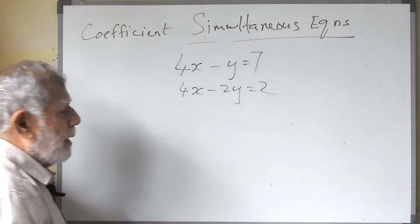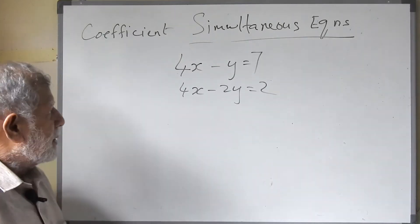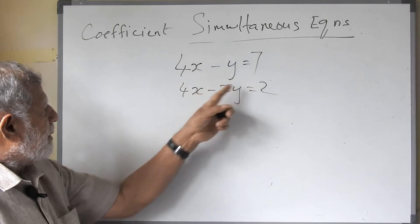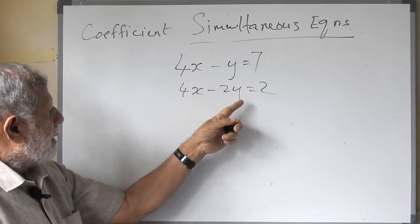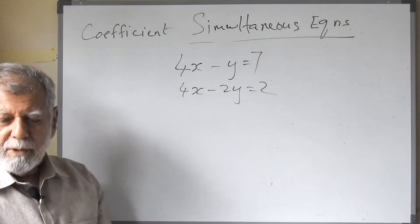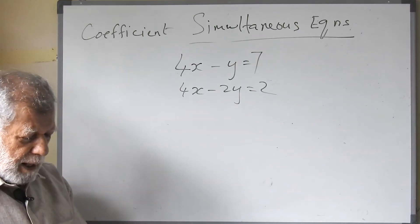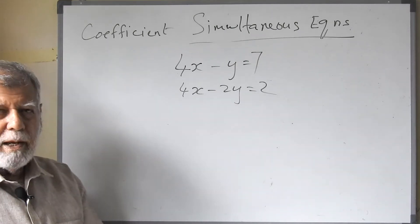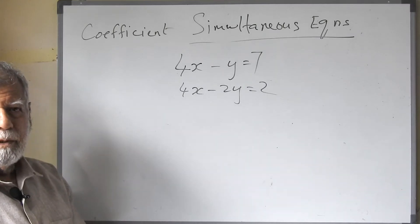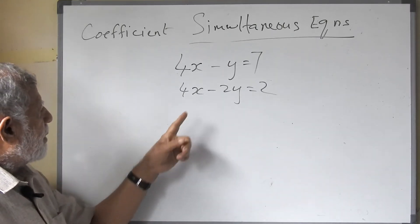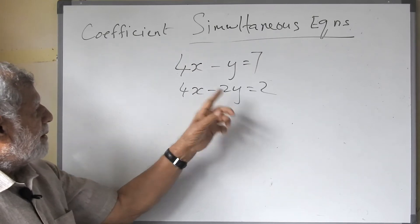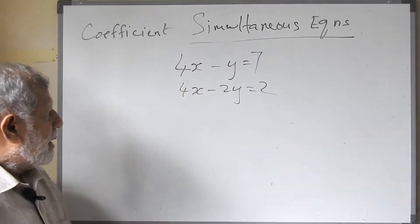Look, we have a simple simultaneous equation: 4x minus y equals 7, and 4x minus 2y equals 2. Now we must observe and see first of all whether any unknown has the same coefficients — equal coefficients. We notice that x has equal coefficient 4, 4. Y is different, so we can't do anything with y.